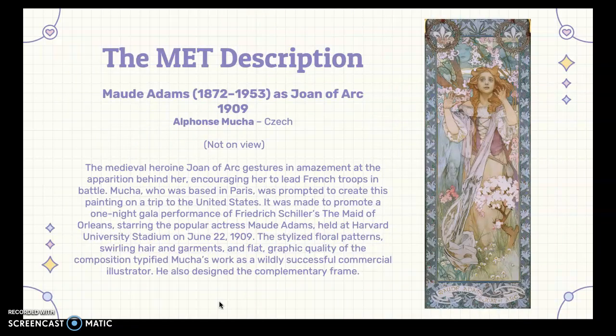This is the official MET description. I won't read through the entire thing because all of the important details are mentioned again later. It gives a little bit about the background, a little bit more about Mucha, and a little bit about Joan of Arc. It also talks about the figure behind Maud Adams — the medieval heroine Joan of Arc — and it's supposed to represent her expressing excitement to play this role.